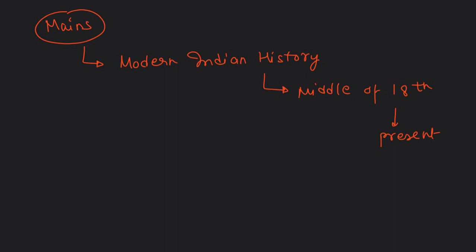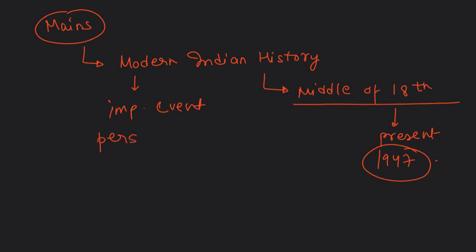Modern Indian history covers from about the middle of the 18th century until the present: significant events, personalities like freedom fighters and nationalist leaders, and various issues — Champaran, Kheda Satyagraha, Ahmedabad Mill Strike, Quit India Movement, Surat Split, Lucknow Pact. The next sub-topic in the syllabus is the Freedom Struggle — its various stages. Freedom Struggle took place in four phases, starting from the Revolt of 1857. You also have to study important contributors to the freedom struggle.